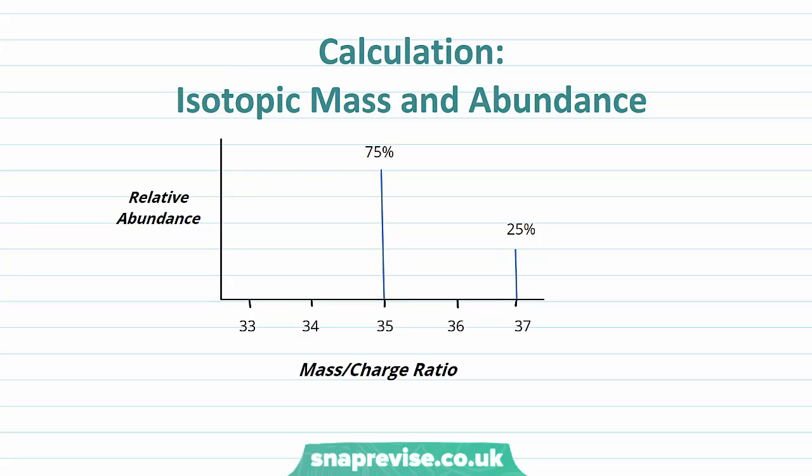So let's go ahead and have a look at the calculations and information we can deduce from these mass spectra. The first is isotopic mass and abundance. So let's first have a look at isotopic mass. So we know that we have two isotopes of chlorine, chlorine-35 and chlorine-37. Now we know the isotopic mass can be taken as the mass number, so the isotopic mass of chlorine-35 is 35 and mass of chlorine-37 is 37.